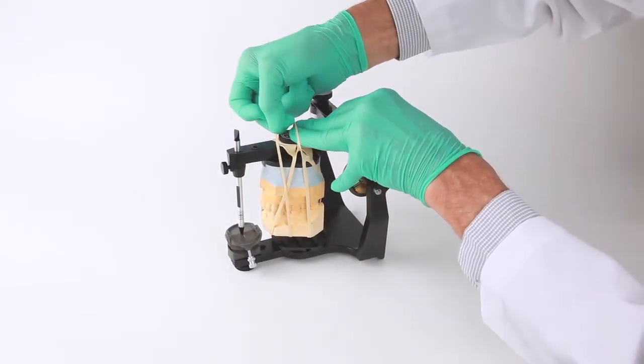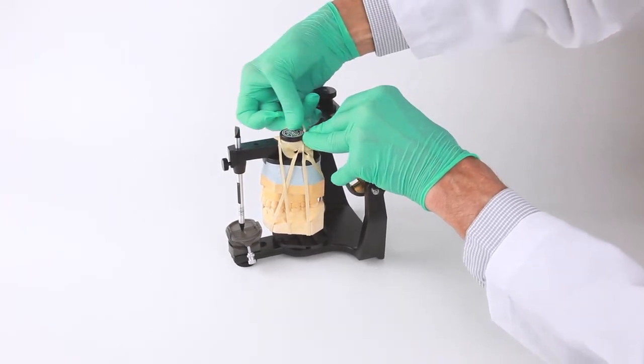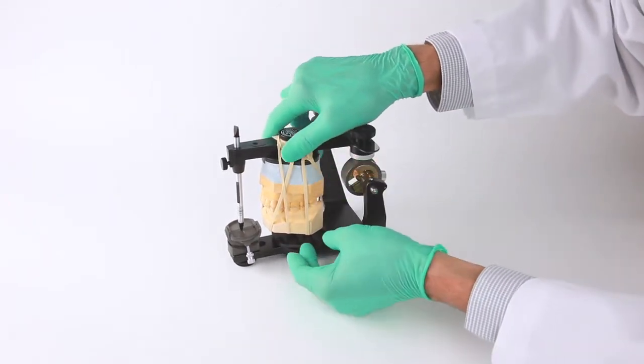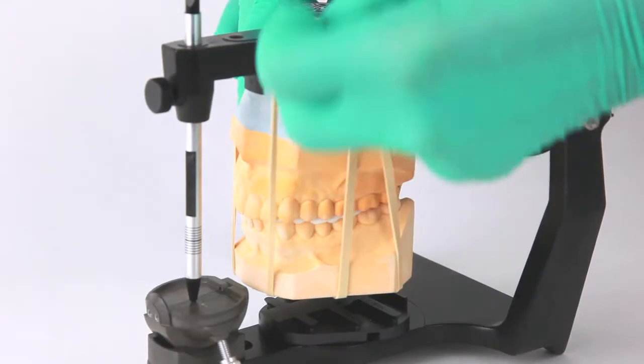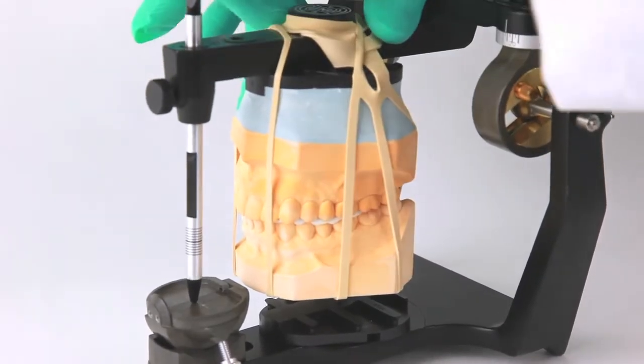If increased tension or stability is desired, any one or all of the elastic arms can be stretched and looped over the thumb screw on the articulator arm.